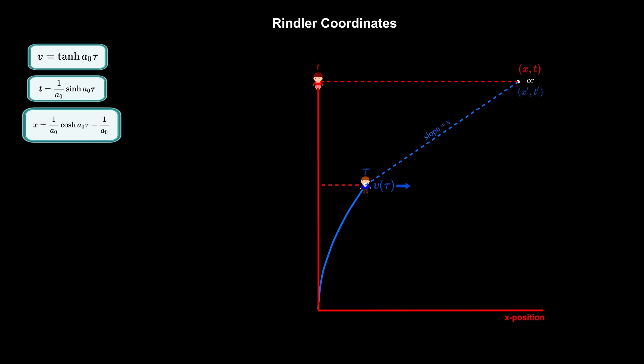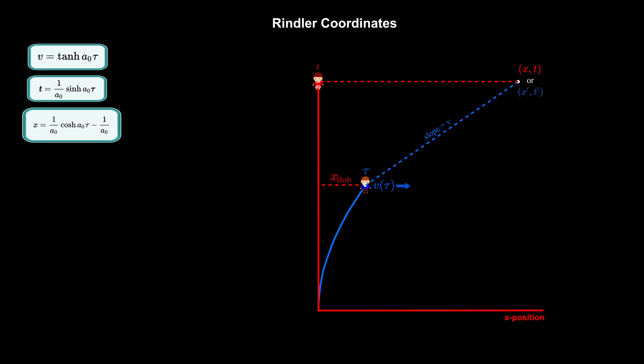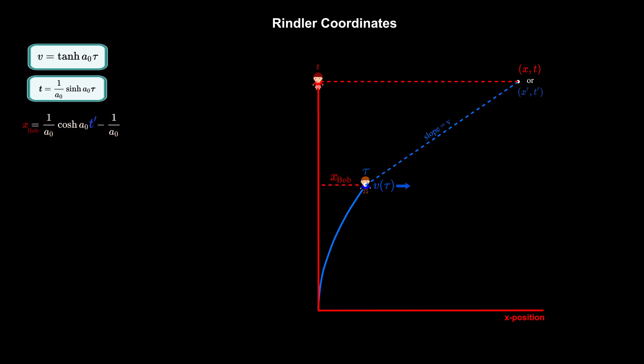We know the length of the smaller dotted red line is given by Bob's x-position, which we can find by using his x-position equation. But this time we will rewrite the time coordinate to be t' instead of tau in the equation. t' and tau are equal in the diagram, since the dotted blue line is a line of simultaneity for Bob. But it is customary to use t' instead of tau when referring to events that are not taking place at Bob's location in space-time.